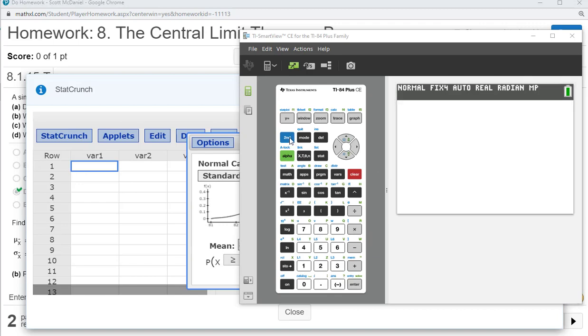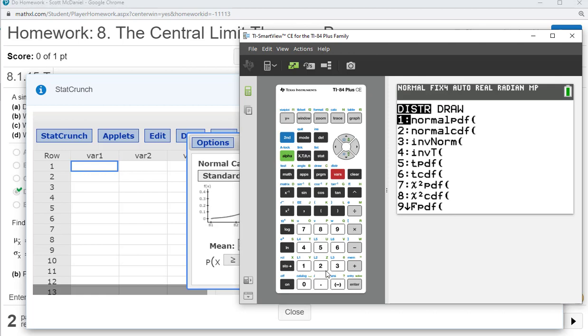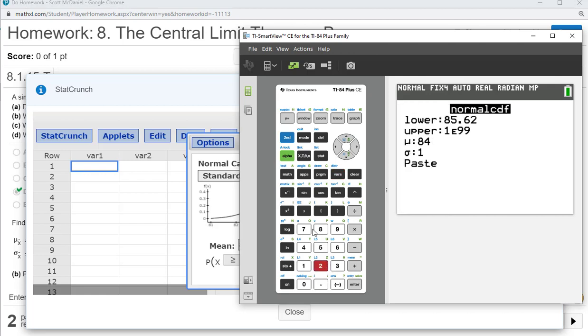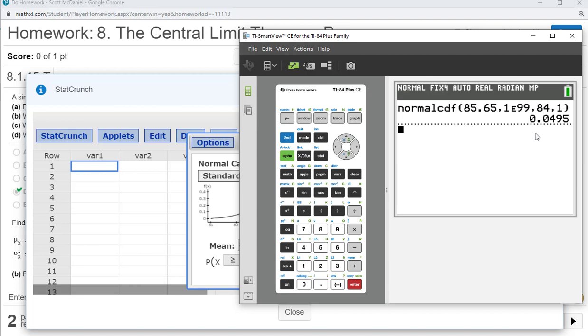On the calculator, we're going to go to second distribution, go to normal CDF number two, and we'll put in 85.65, and then one E99, 84 for the mean, and one for standard deviation and paste. Press enter, and we get 0.0495.